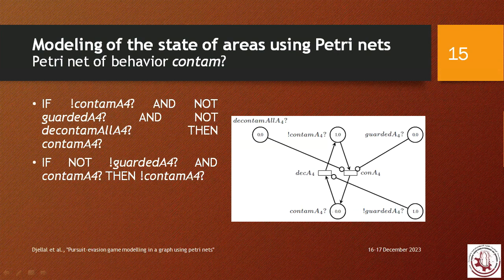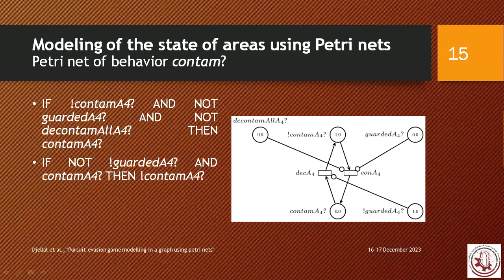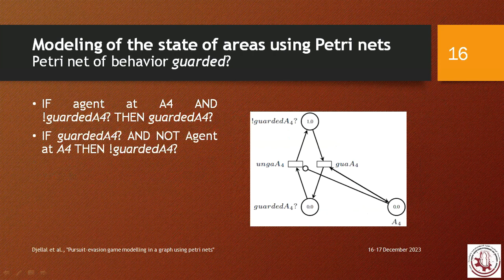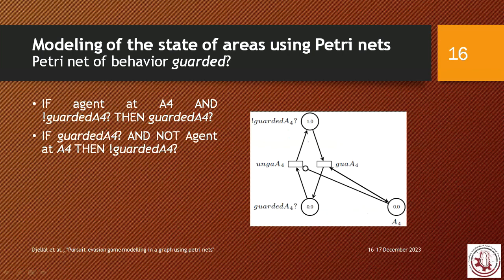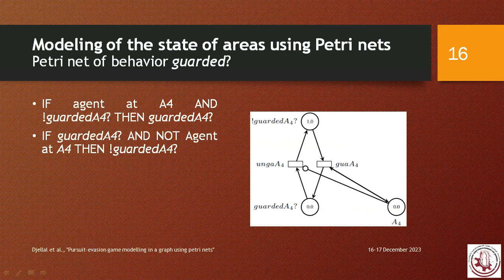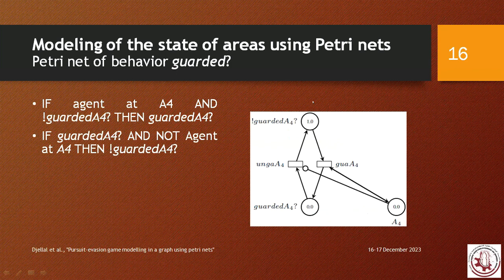An area is contaminated and becomes decontaminated if and only if there is a guardian in that area. The third sub-Petri net models the guarded behavior: a token in 'not guarded' transitions to 'guarded' if and only if there is an agent token in area A4, and it returns to 'not guarded' if and only if there is no agent in area A4.